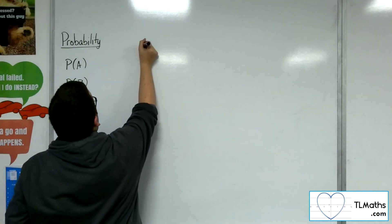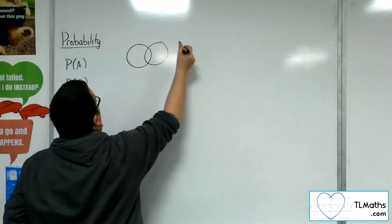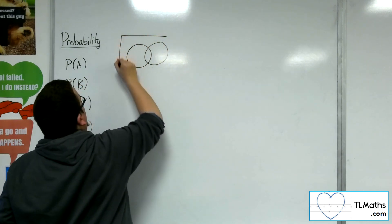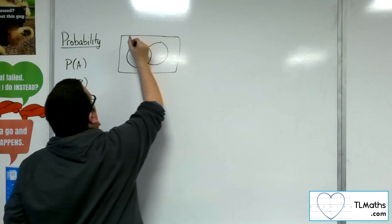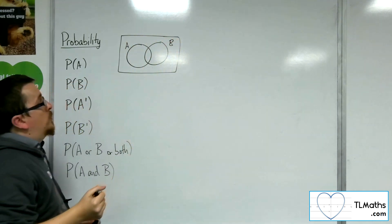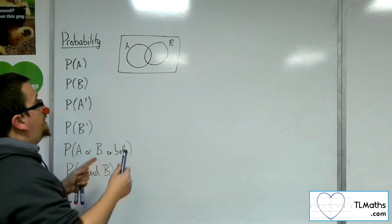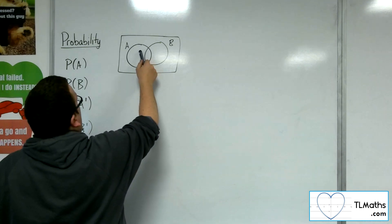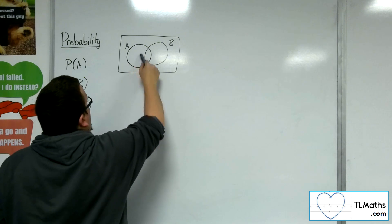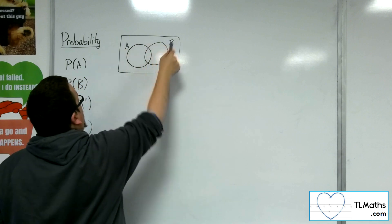A Venn diagram would be drawn usually, traditionally, as two circles that are intersecting and overlapping within a box, where one circle represents event A, the other circle represents event B. So what it allows for is just A, A and B, just B, and neither. So it allows for every eventuality.